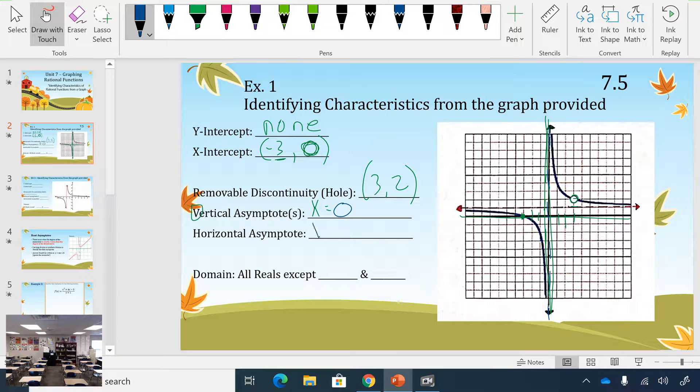And then if this is an x in the vertical, then the horizontal asymptote has got to be our y. So we go to y and we see where does it cross? Crosses right there at 1.